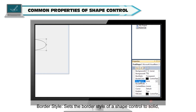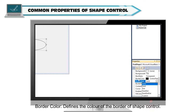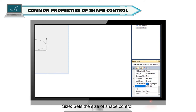Border Style sets the border style of a shape control to solid, transparent, dash, dot, etc. Border Color defines the color of the border of the shape control. Size sets the size of the shape control.